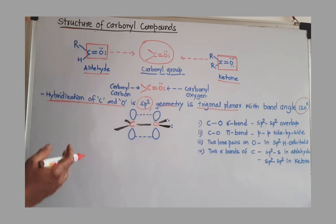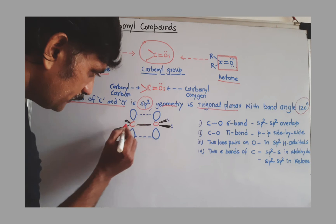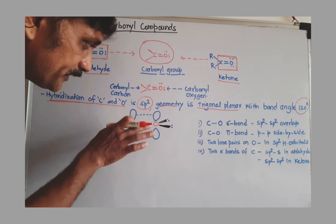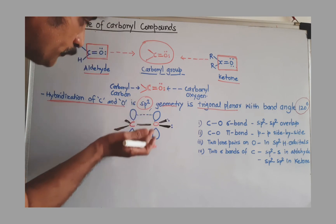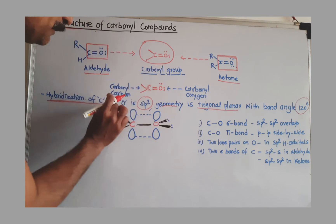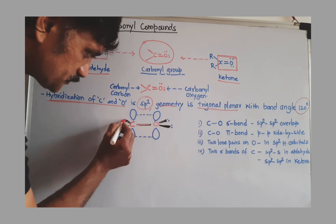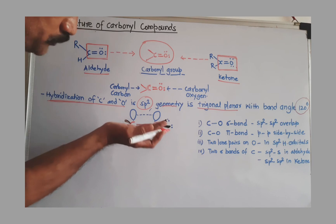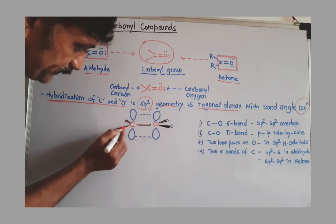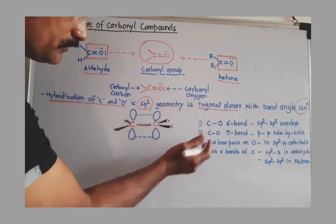Once we know the geometry and the hybridization, we can find out the bonding pattern in the structure. Here I have used black color for the sp2 hybridization of carbon. You can imagine this is a trigonal planar geometry with a bond angle of 120 degrees.